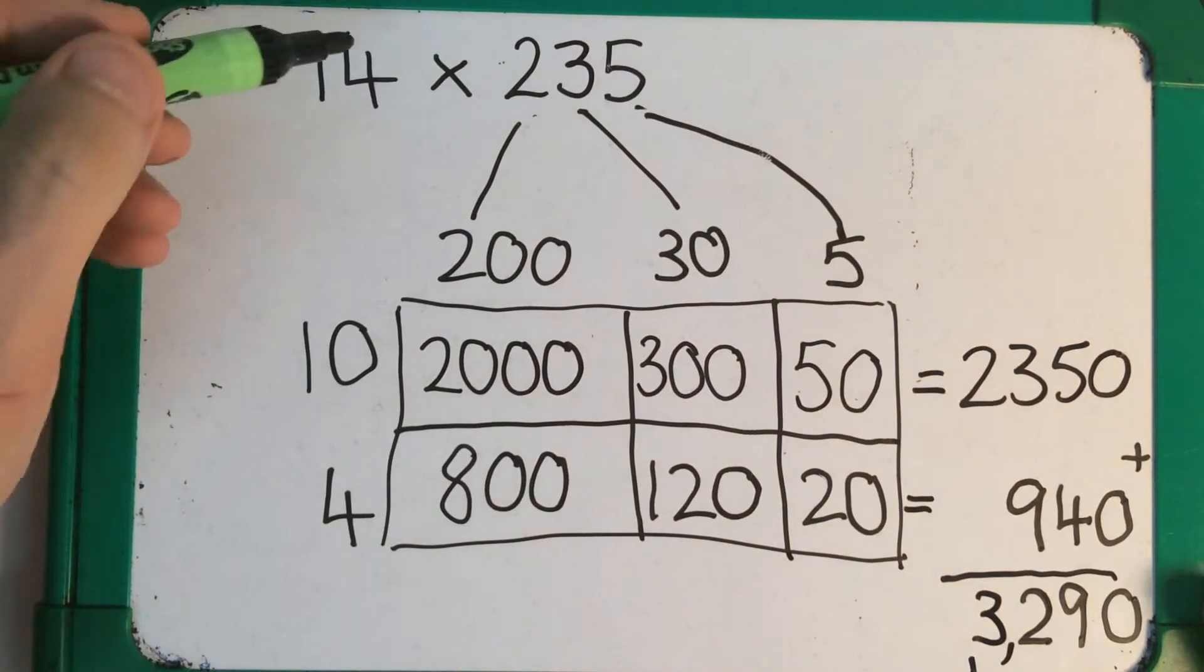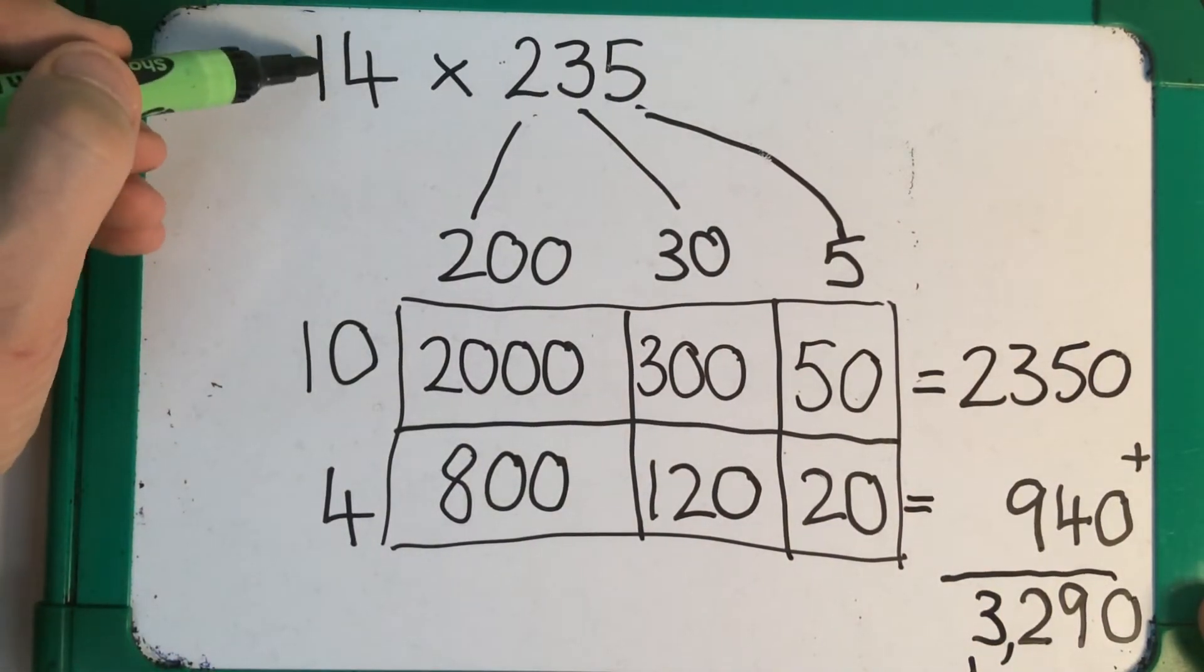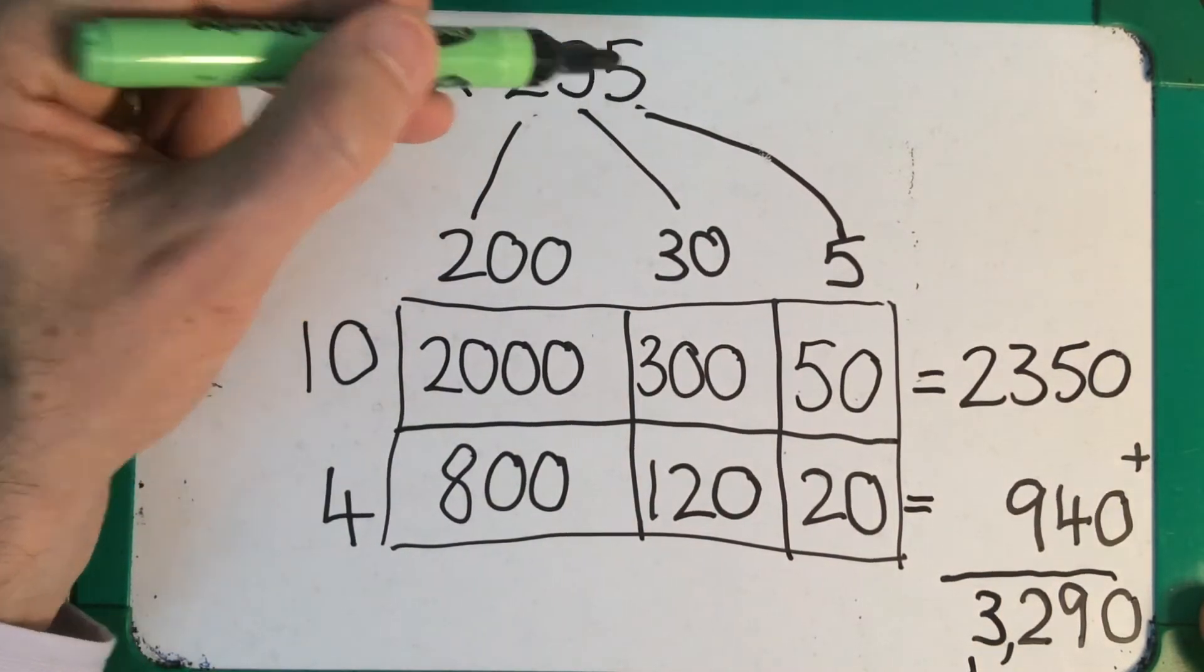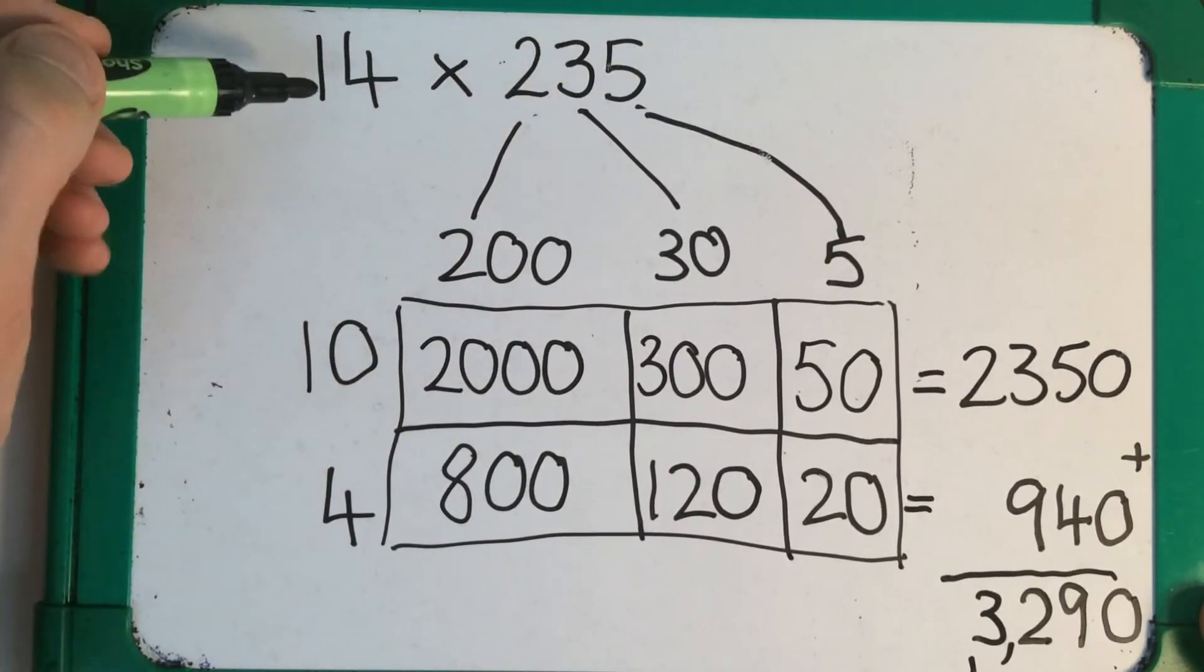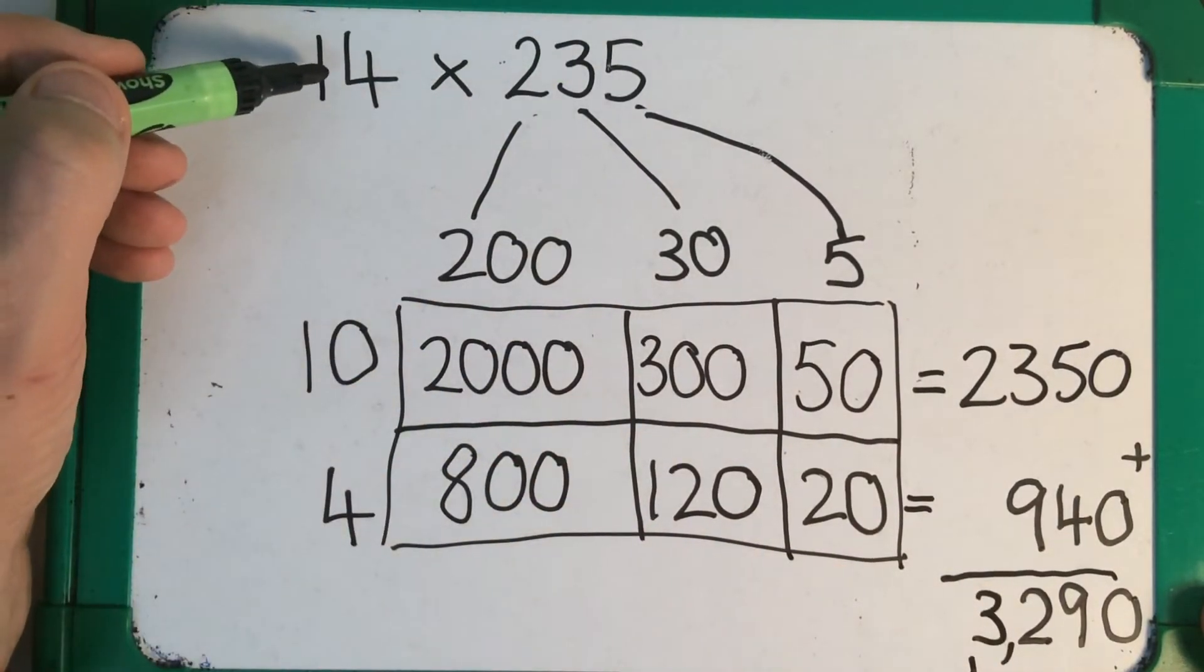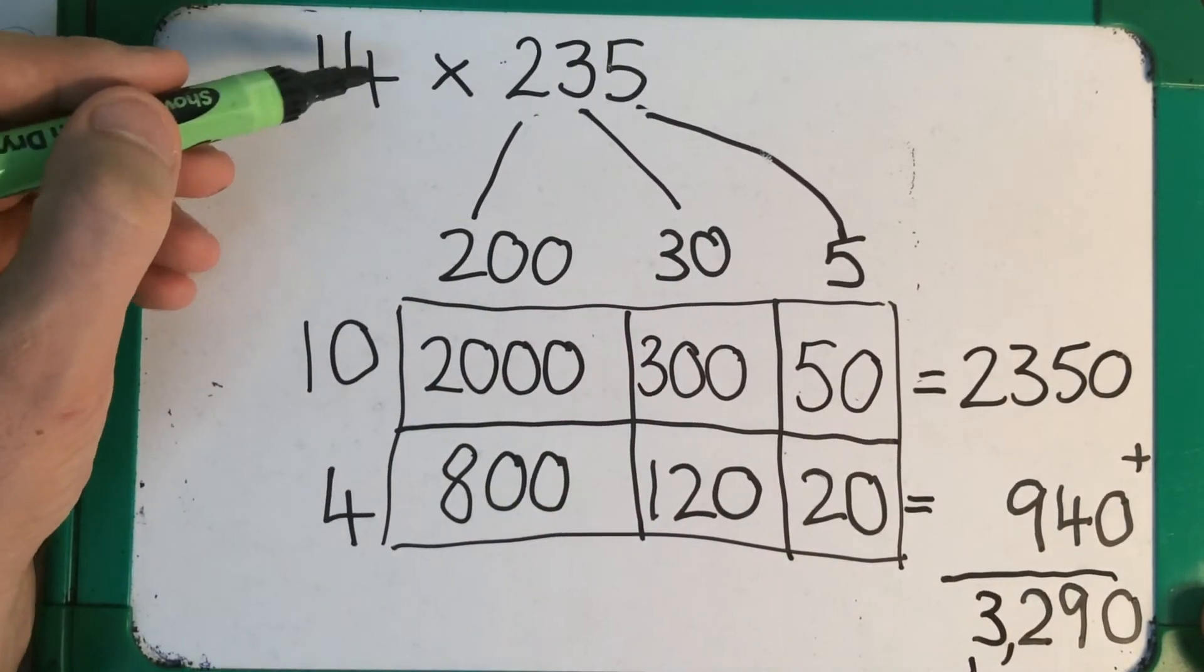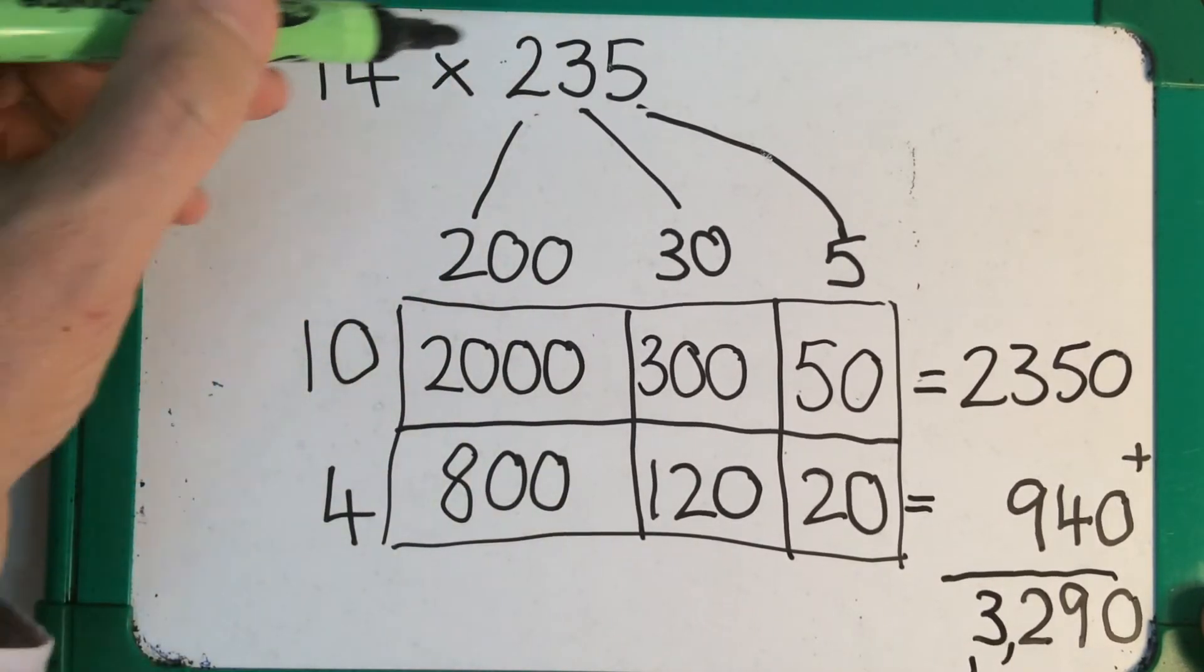Now let's just check, see if that looks about right. I know that 10 times 235 would be 2,350. And I've got about 4 more lots of that. So it's about 1,000 more.